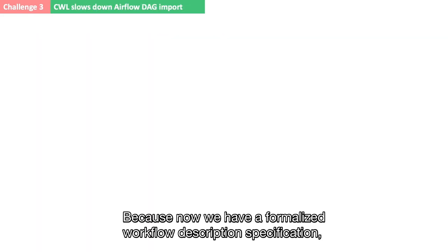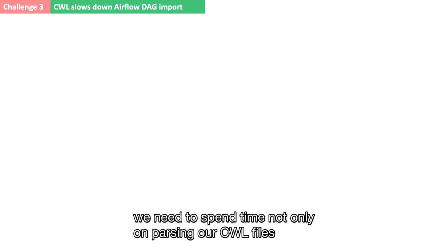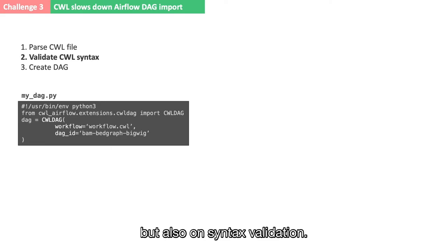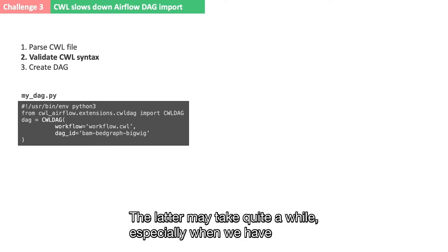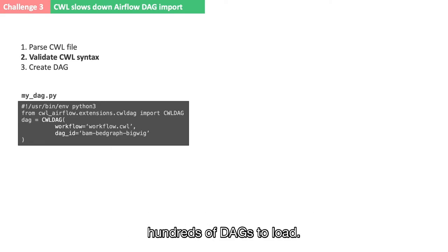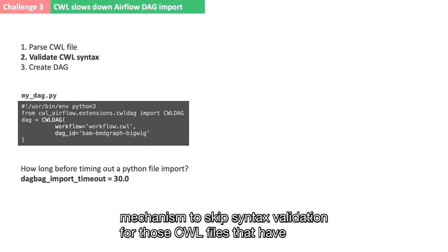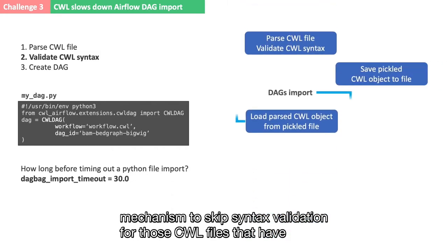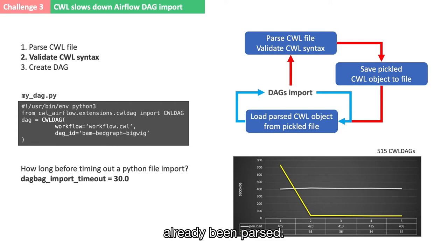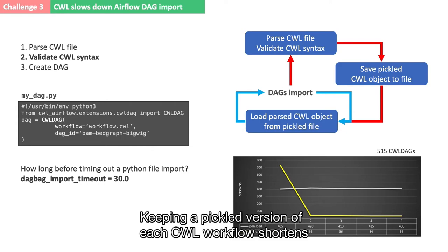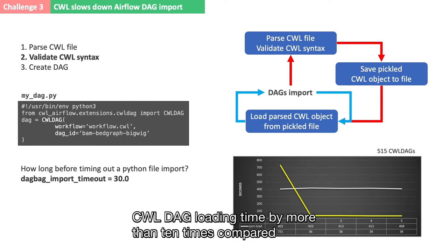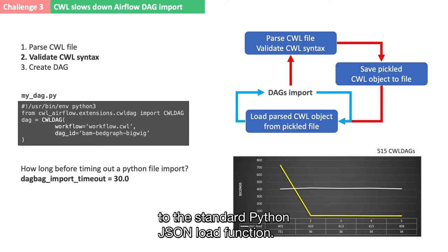Because now we have a formalized workflow description specification, we need to spend time not only on parsing our CWL files, but also on syntax validation. The latter may take quite a while, especially when we have hundreds of DAGs to load. To prevent a timeout while importing DAGs, we developed a simple mechanism to skip syntax validation for those CWL files that have already been parsed. Keeping a pickled version of each CWL workflow shortens CWL DAG loading time by more than 10 times compared to the standard Python JSON load function.